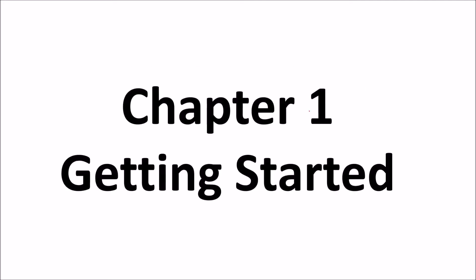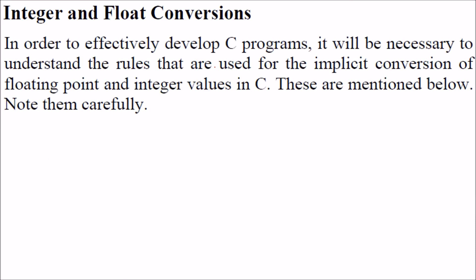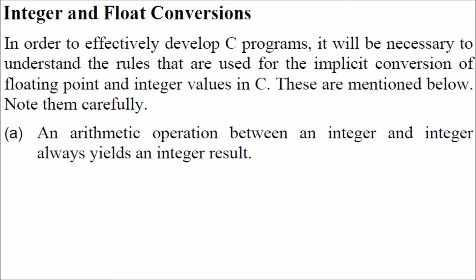We are discussing Chapter 1, which is 'Getting Started'. Regarding integer and float conversions, whenever we are dealing with a program there are certain conversions - one is called implicit and one is called explicit. Let us see how this conversion takes place with arithmetic expression operations between different types.